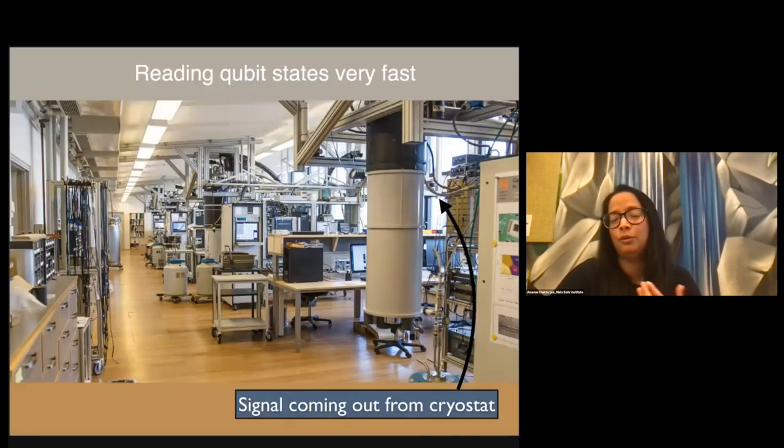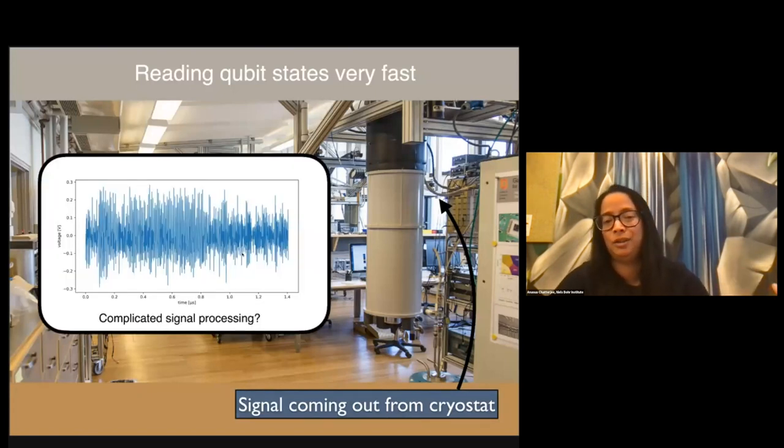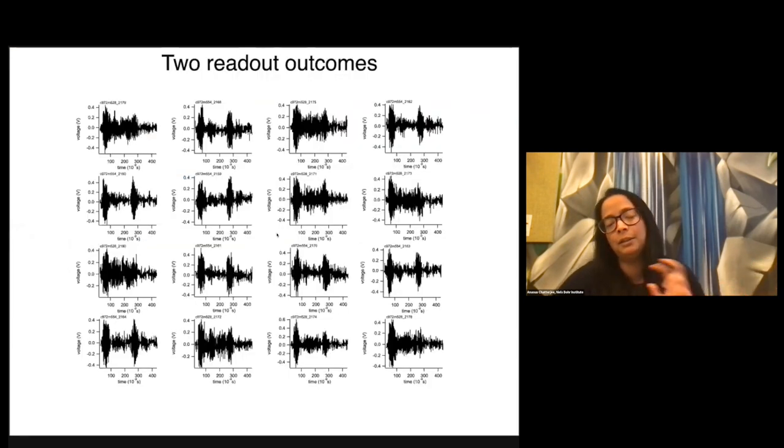The second thing we want to do is to read qubit states very fast. We want to see if the qubit collapses to a 0 or a 1. And so what we do is this cable coming out here is the signal coming out from the cryostat. But if you look at it with your own naked eye, it looks kind of complex and you won't really understand much. However, if you look at it a little bit more carefully, you'll see that the 0 and 1, the two readout outcomes, are actually okay to distinguish with your naked eye.